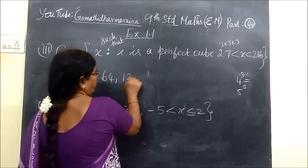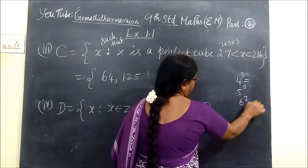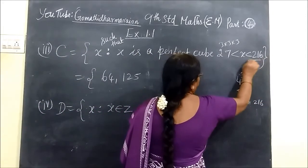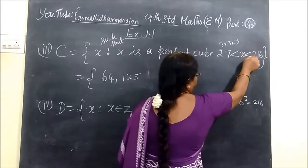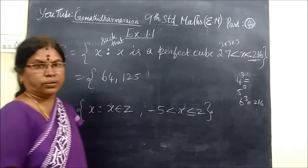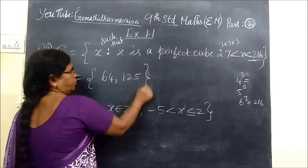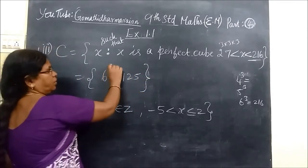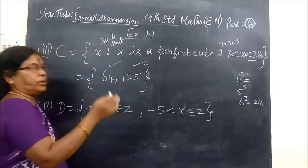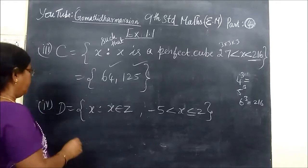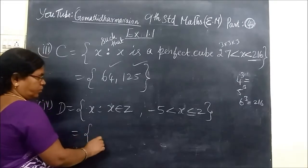Then 6 cube, 216. But here only less than, so you should not consider 6 cube. So this one is the answer: 27, 64, 125. This is the perfect cube between 27 and 216. And next we write in the roster form.